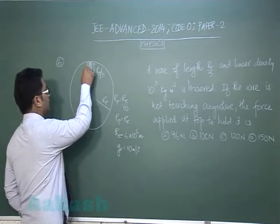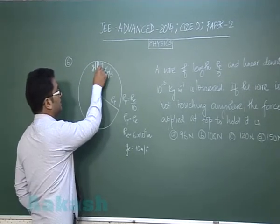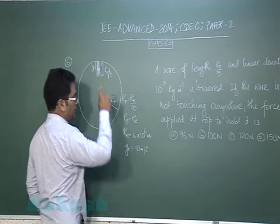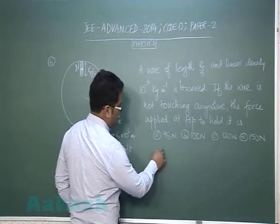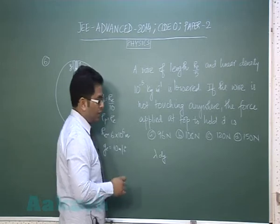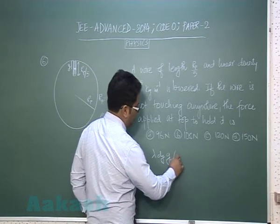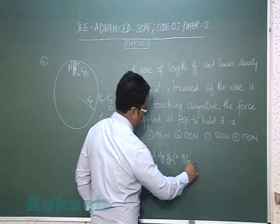So if I say the depth is y, a very small element, the weight of this element would be lambda dy into g. And what is g there? That's g planet one minus y by r.